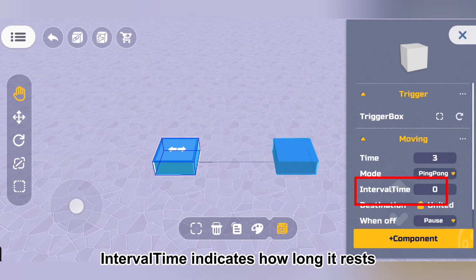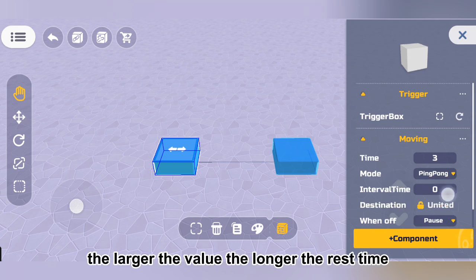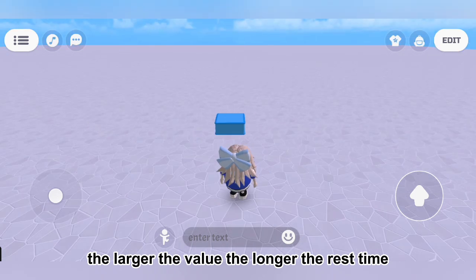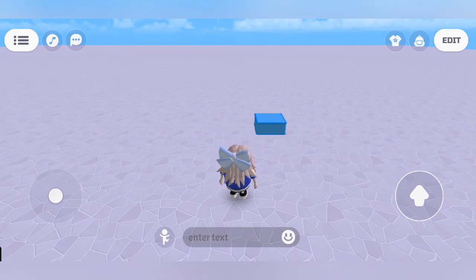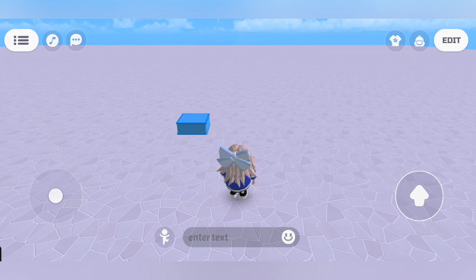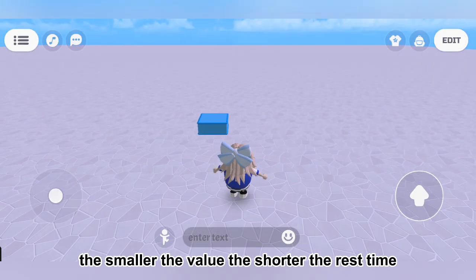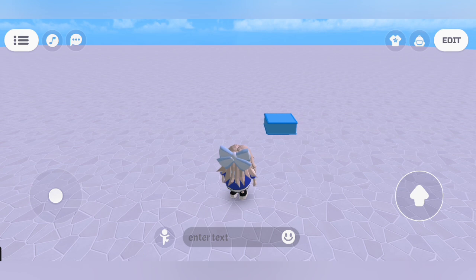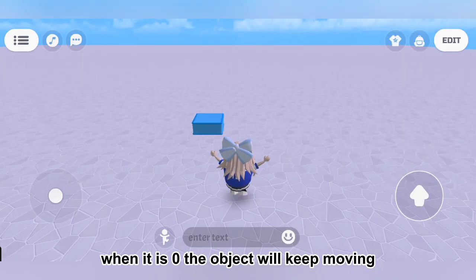Interval time indicates how long it rests between two movements in seconds. The larger the value, the longer the rest time. The smaller the value, the shorter the rest time. When it is zero, the object will keep moving.